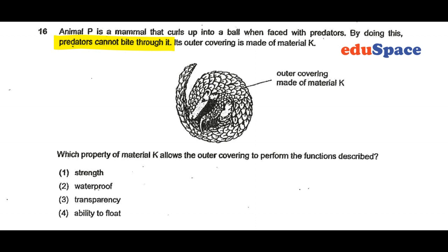So in this case, number 1 is the answer. The property of material K must be the high strength — the high strength that allows it to protect animal pee.